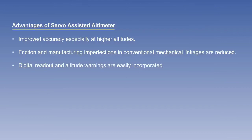To recap, the advantages of the servo-assisted altimeter are that it gives improved accuracy, particularly at higher altitudes. Additional advantages are that friction and manufacturing imperfections in the mechanical gearing of a conventional altimeter are reduced, and altitude sensing in electrical form is available as a central source of information for digital readouts and systems such as autopilot, flight data recorder, and altitude warnings. This concludes the lesson. A summary of the main points to consider from the lesson follows.